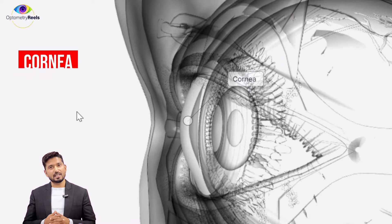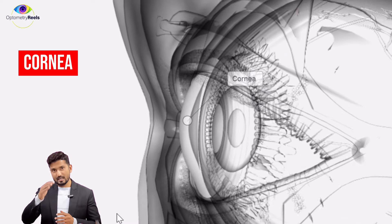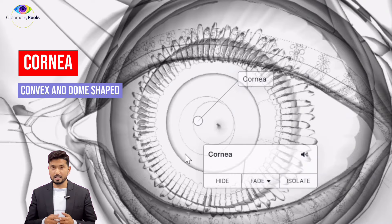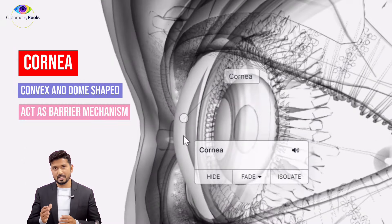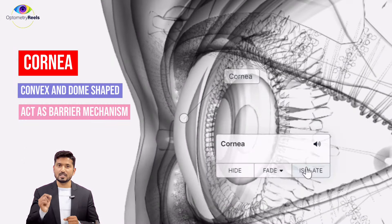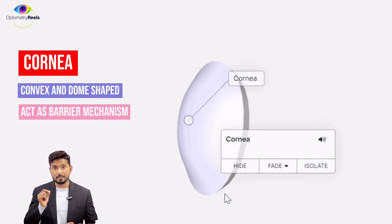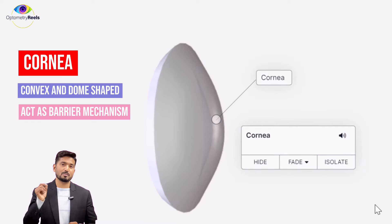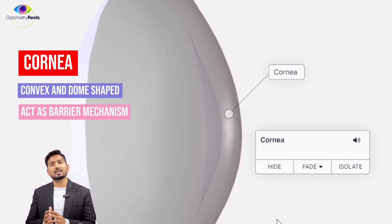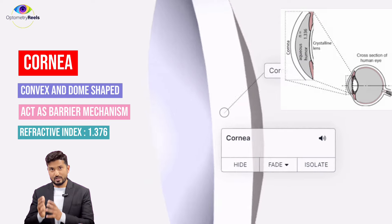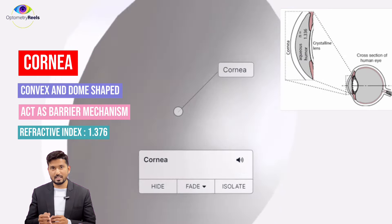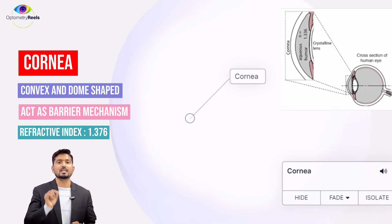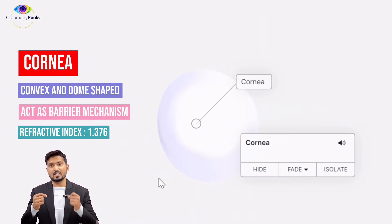Another important structure in the eye is the cornea, which is a convex or dome shape that is clear and transparent and has a barrier mechanism. It does not allow dust in, has UV-absorbing ability, and also prevents infection. Apart from that, the cornea contains refractive power and a refractive index which refracts light — bending it to reach the retina — which makes us see clearly.